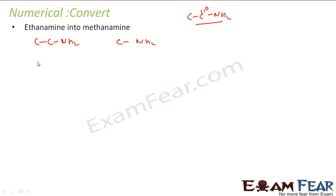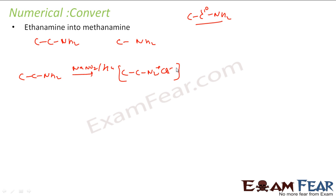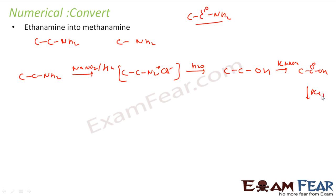To remove the NH2 group, I form a diazonium salt: react with NaNO2 and HCl to get an unstable diazonium salt. Then add water — I get the alcohol (ethanol). Once I have the alcohol, I oxidize it with KMnO4 to get ethanoic acid (COOH type), then react with PCl5 or SOCl2 to get the acid chloride, and then react with ammonia to get the amide CONH2.